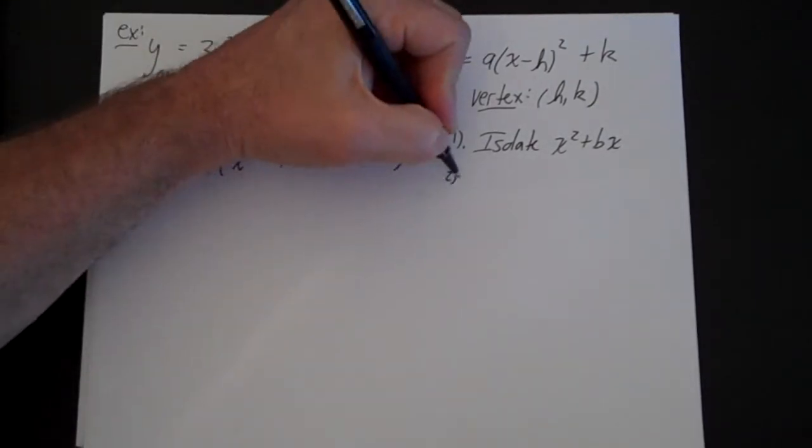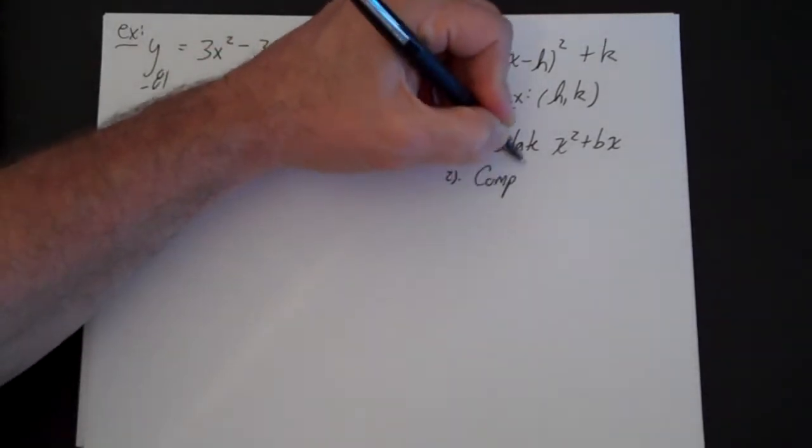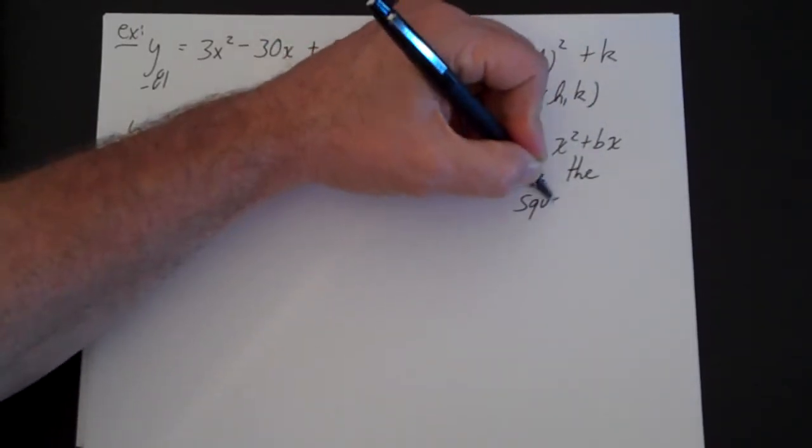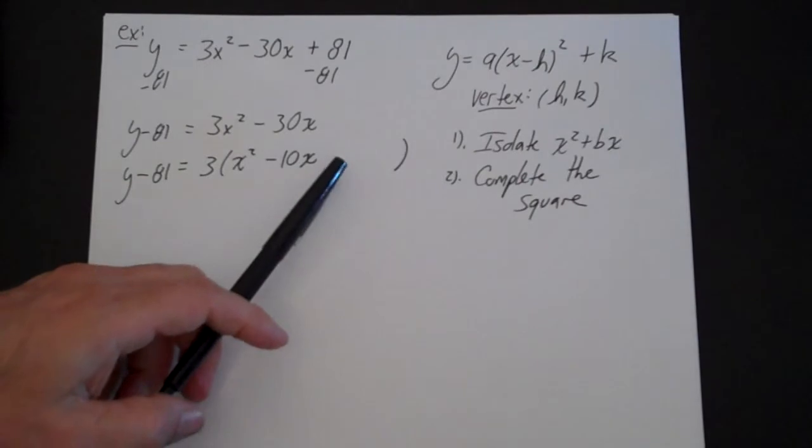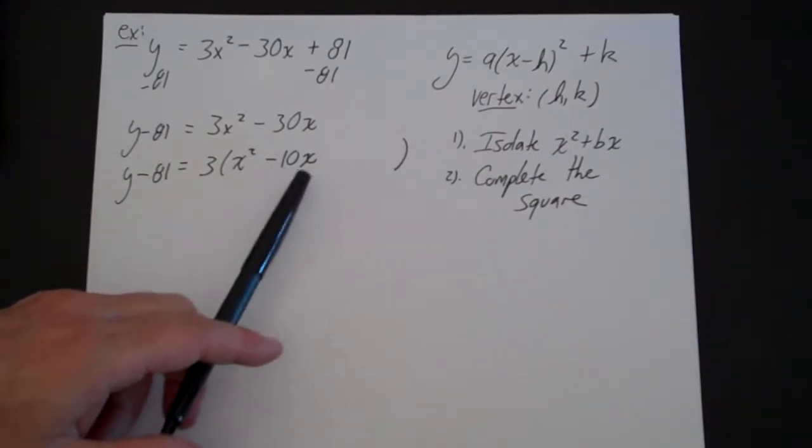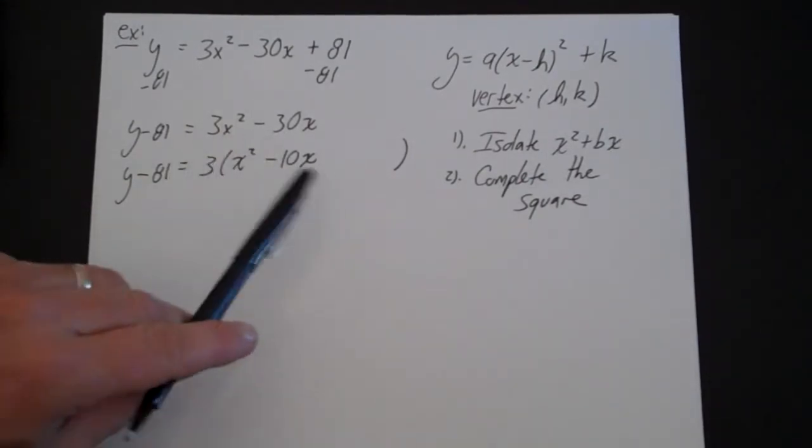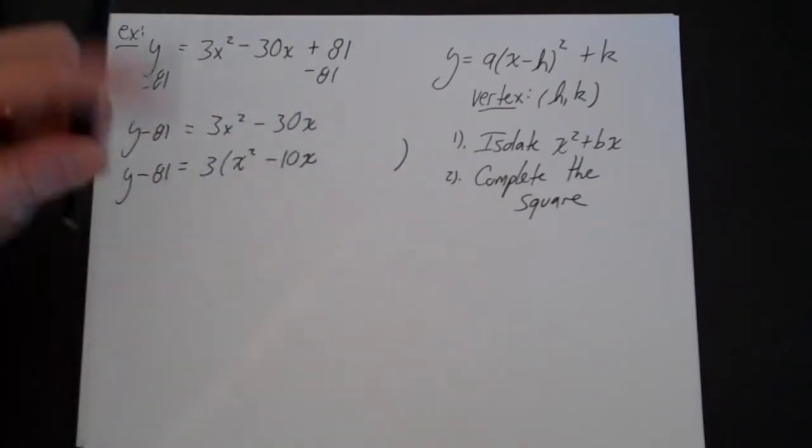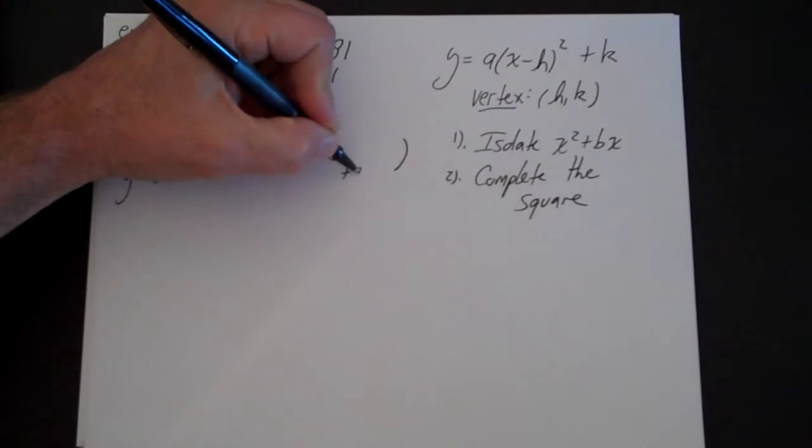The second step is I'm going to complete the square. And what I mean by completing the square is I'm going to find out what number to put here so this is a perfect square trinomial. And the way that I do that is I look at b. b is minus 10, and I half it. Half minus 10 is minus 5, and then I'm going to square it. Minus 5 squared is going to be a positive 25, so I'm going to add 25 there.